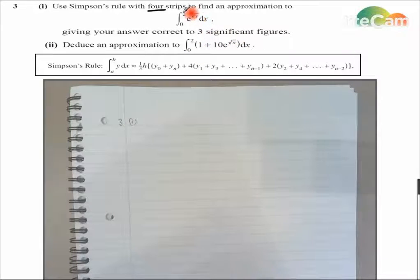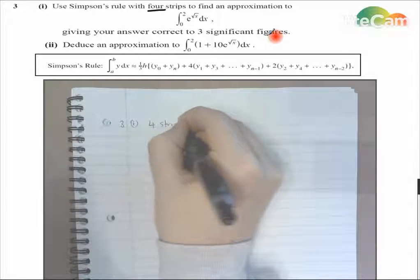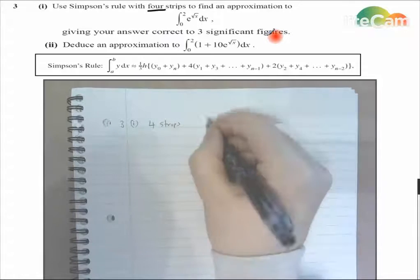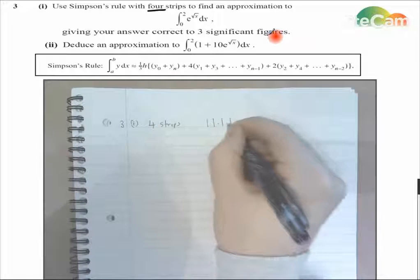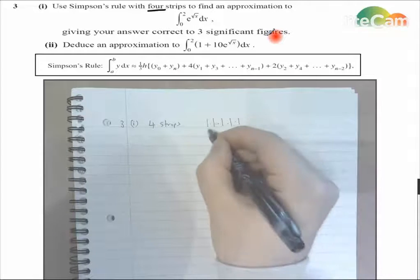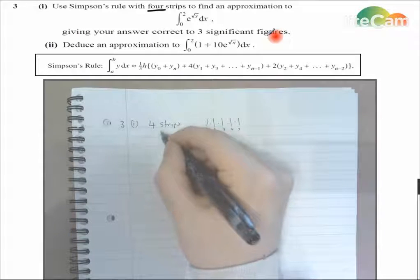So, if I'm going to integrate between 0 and 2, and there are 4 strips, because there's a point at the beginning and the end, remember if we've got 4 strips - 1, 2, 3, 4 - you will need 5 ordinates.